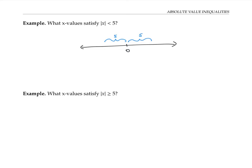So x has to live somewhere in between negative five and five. We can express this as an inequality without absolute value signs by saying negative five is less than x, which is less than five. Or we can use interval notation: soft bracket, negative five, five, soft bracket. Both of these formulations are equivalent to the original one, but don't involve the absolute value signs.